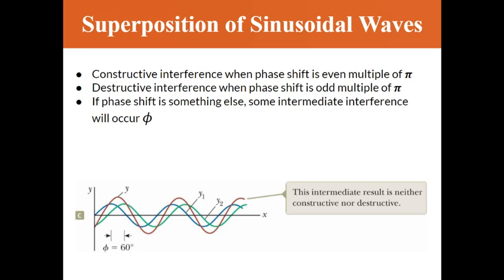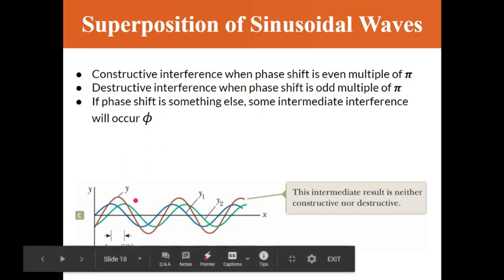The waves can be phase shifted by some other factor, which will make the net amplitude either smaller or bigger depending on how close that is to either 0 or 180 degrees. In the drawing here, Y1 and Y2 are the blue and green curves respectively, shifted by only 60 degrees. The peaks and troughs are not really aligned, so this miscellaneous alignment means the resulting wave is still taller than Y1 and Y2, but not as tall as it could possibly be. This is an intermediate result.